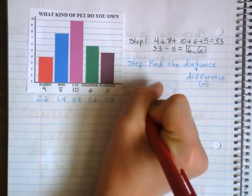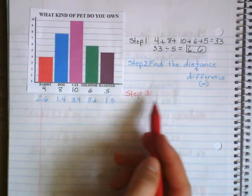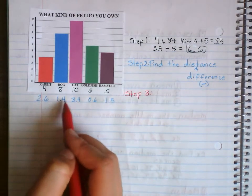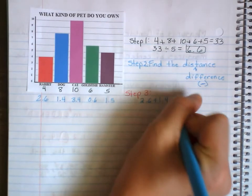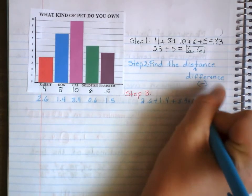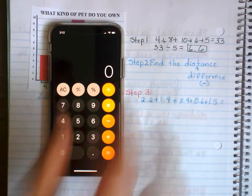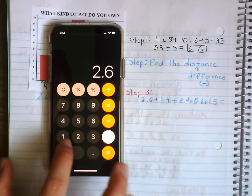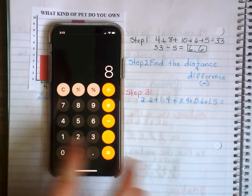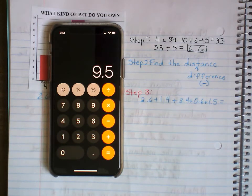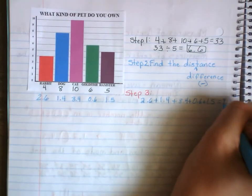Step three: find the mean of the distances. We have to find the mean of these five distances. First we add them up: 2.6 plus 1.4 plus 3.4 plus 0.6 plus 1.6. Remember, if you're adding decimals vertically on paper, you have to line up the decimal points. The sum is 9.5.